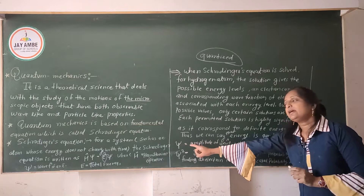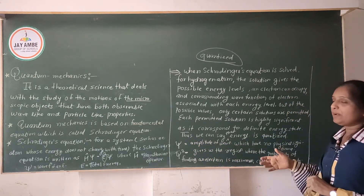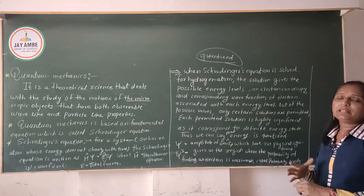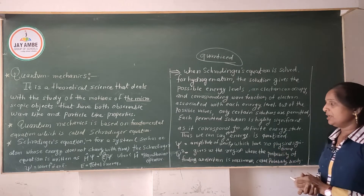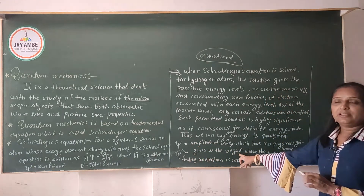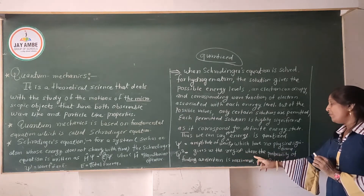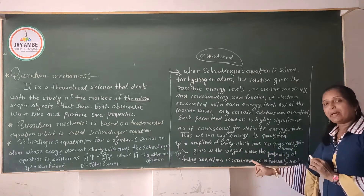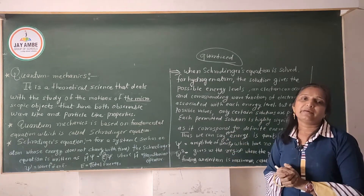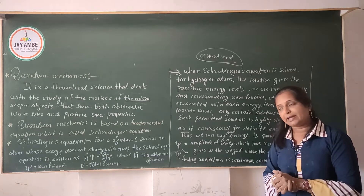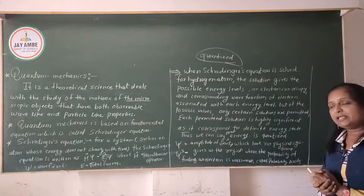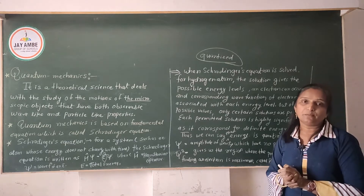The wave function ψ gives the amplitude of the wave, but it has no physical significance by itself — its value or magnitude alone means nothing. But when we take ψ squared, it gives us the area where the probability of finding an electron is maximum. So ψ squared is the probability density — it indicates the region where the probability of finding the electron is maximum.